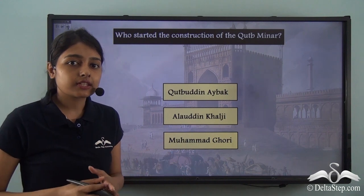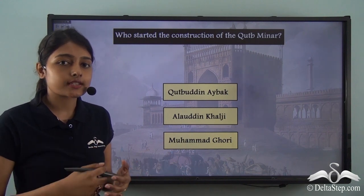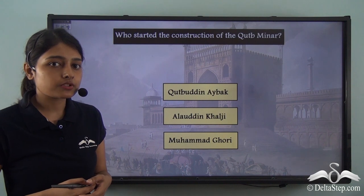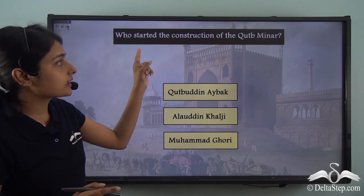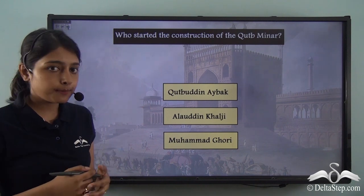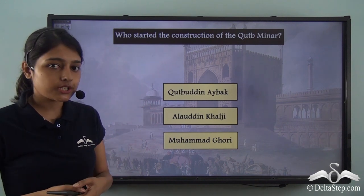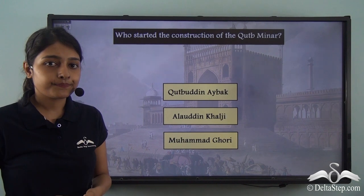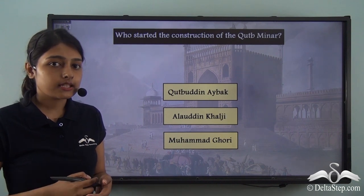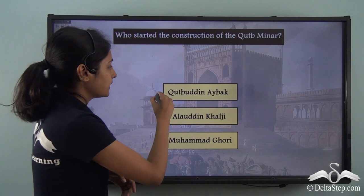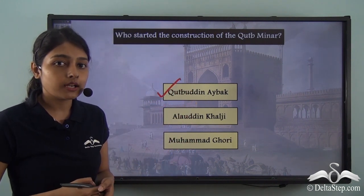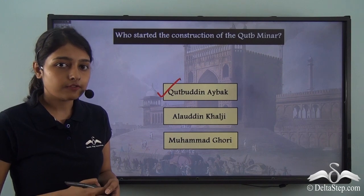Before proceeding, a quick question: who started the construction of the Qutub Minar — was it Qutub Uddin Aibak, Alauddin Khalji, or Muhammad Ghori? The answer is Qutub Uddin Aibak, who started its construction in 1191.